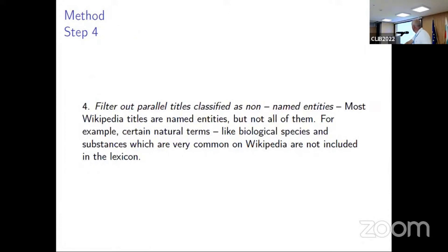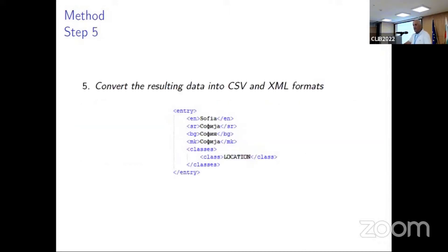In step four, parallel titles classified as non-named entities are filtered out. There are some Wikipedia articles with titles that are not named entities — for example, biological species and chemical substances, which are very common on Wikipedia but are not included in the lexicon. Finally, the program converts the resulting data into CSV and XML formats.